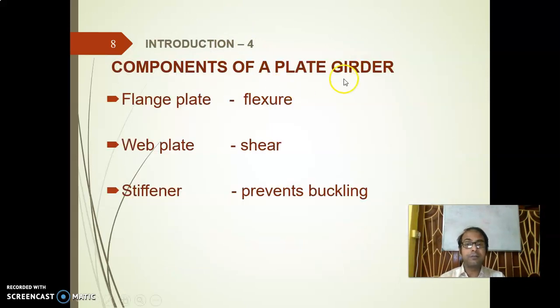What are the three components? Number one is flange plates, which actually take care of the flexure or bending. The web plate, which generally takes the shear. And the stiffeners, which prevent shear buckling. This is a new term, shear buckling, which is to be discussed in this topic.